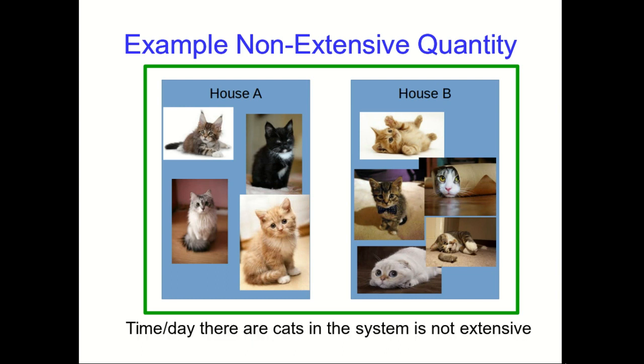So the time per day that there are cats in the system is not an extensive quantity, because it doesn't obey that additive rule that all extensive quantities have to.